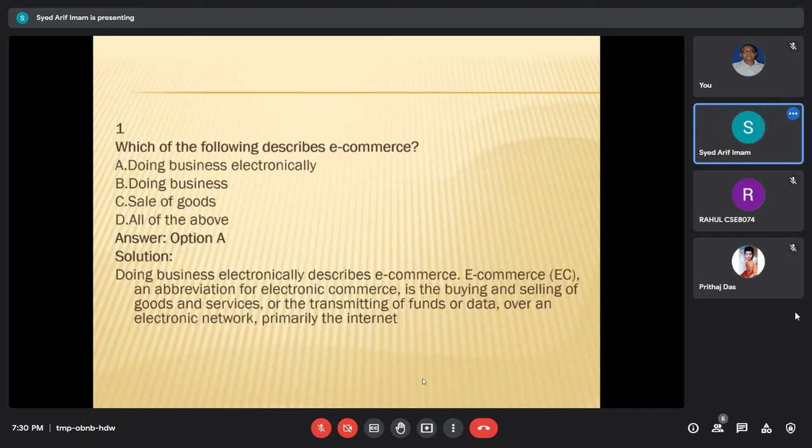So what is the first question? Which of the following describes e-commerce? E-commerce is basically doing business electronically, which means that e-commerce is an abbreviation of electronic commerce in which there is a buying and selling of goods and services or transmitting of funds or data over an electronic network, basically over the internet.